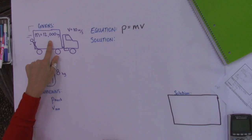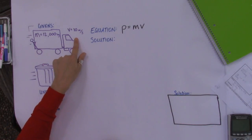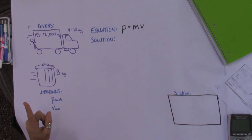The question asks what is the momentum of a garbage truck that is 12,000 kilograms going 10 meters per second, and the second part is at what speed would an 8 kilogram trash can have the same momentum as the truck.